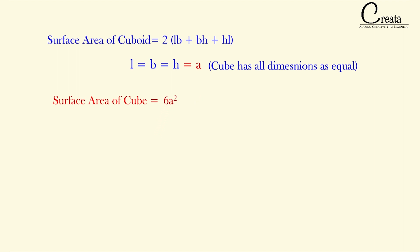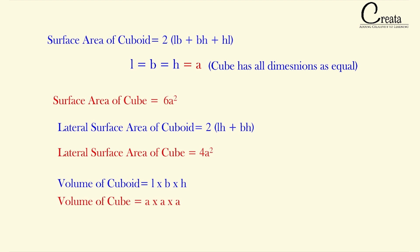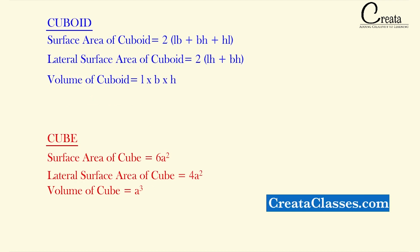Similarly, for the lateral surface area, we take the formula for the lateral surface area of the cuboid and replace L, B, H with A. We get the lateral surface area of the cube as 4A². For the volume, we know the volume of a cuboid is L×B×H — replacing with A, we get the volume of a cube as A³. These are the formulas of the cube.